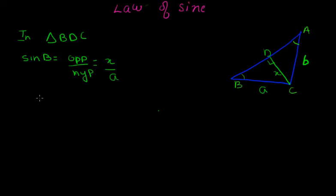Now I'm interested in the value of x. What is x equal to? I'll shift a to the other side, so it becomes sin B times a. Similarly, let's take the other triangle. In triangle ADC, what is sin A equal to? It is equal to x by b, opposite side by hypotenuse.